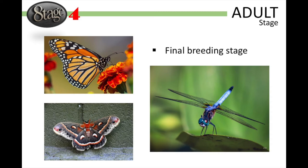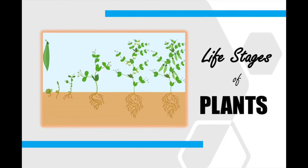Just like humans and animals, the life cycle of plants describes the different stages of the plant from the beginning of life until the end. Let us understand more about plant life stages.